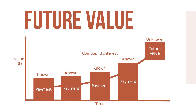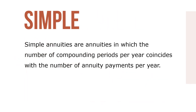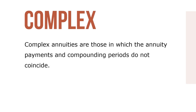This figure shows how the future value of an annuity works in terms of value and time. That can be compared with how the present value of an annuity works based on value and time. Simple annuities are annuities in which the number of compounding periods per year coincides with the number of annuity payments per year. Complex annuities are those in which the annuity payments and compounding periods do not coincide.